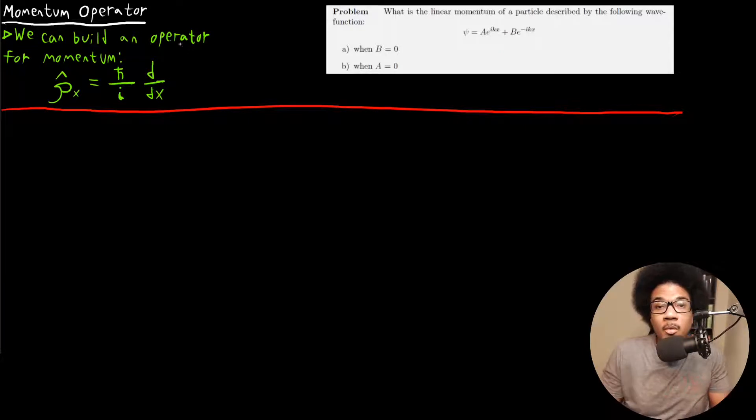The first one that we really want to introduce here, outside of the Hamiltonian, is the momentum operator. This operator gives you the linear momentum of a particle. It's an operator because it's telling you to do something. It's telling you to take the derivative with respect to x and multiply it by h bar Planck's constant over i, the imaginary number.